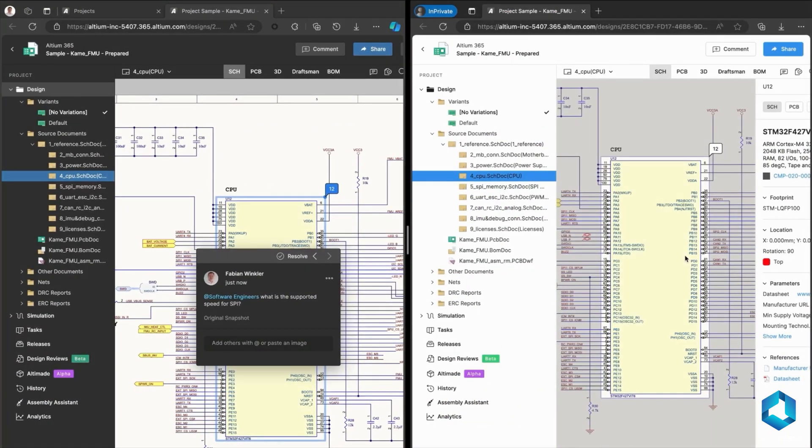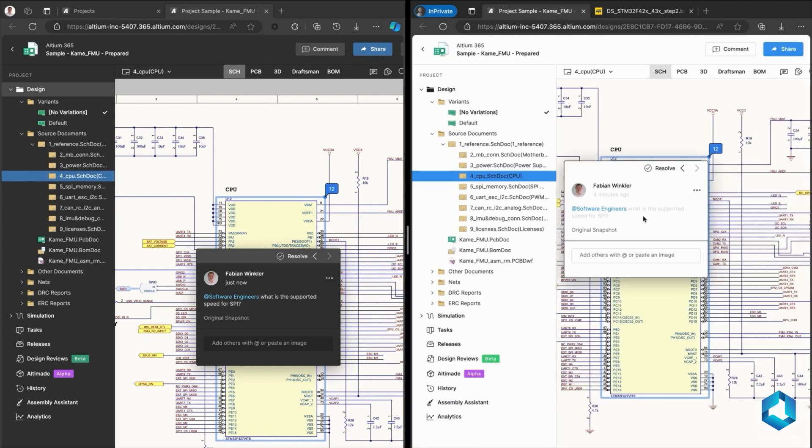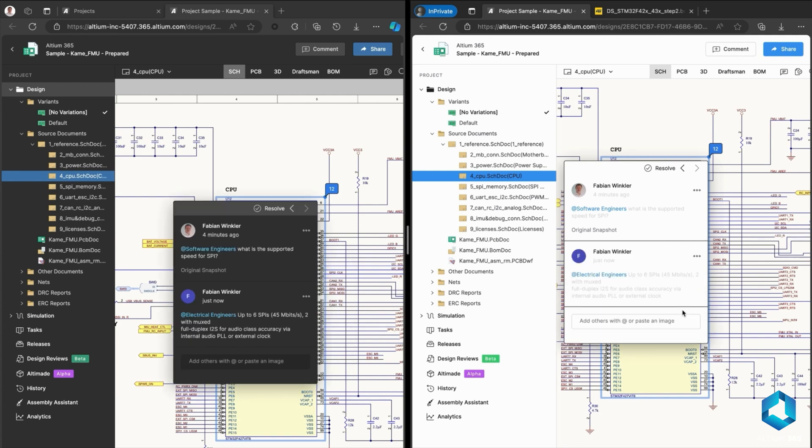And now it gets even better with Altium 365, which connects our design to our teams, manufacturer and even component suppliers through cloud. With this, our team can review, comment and collaborate on the projects from anywhere in the world.